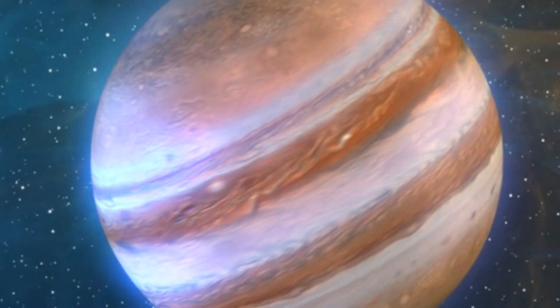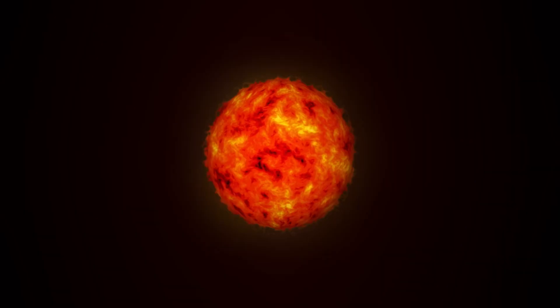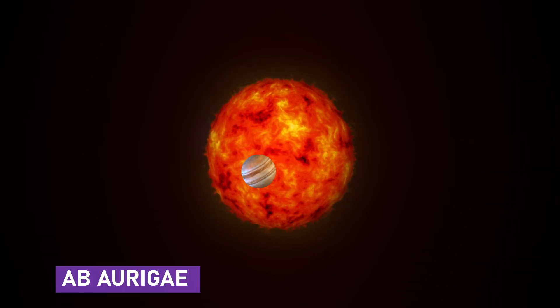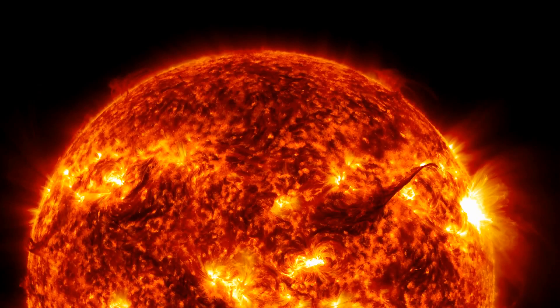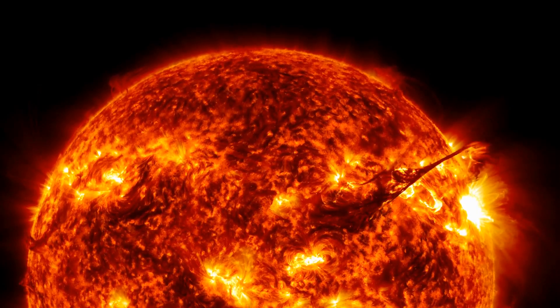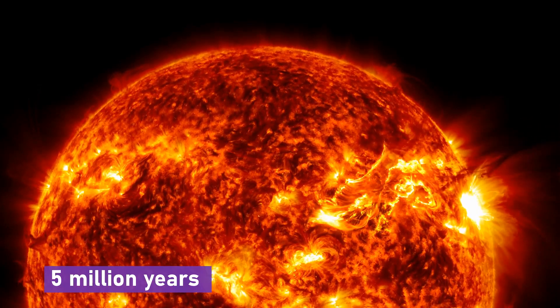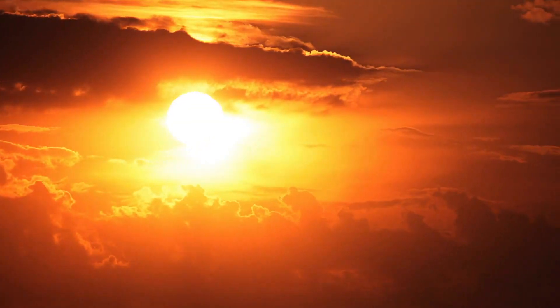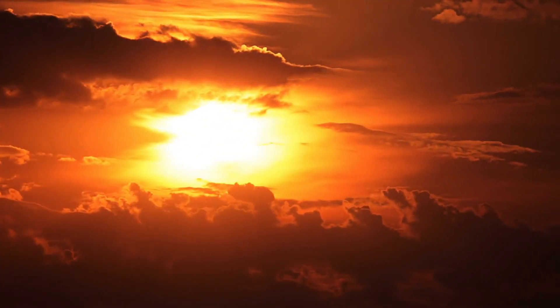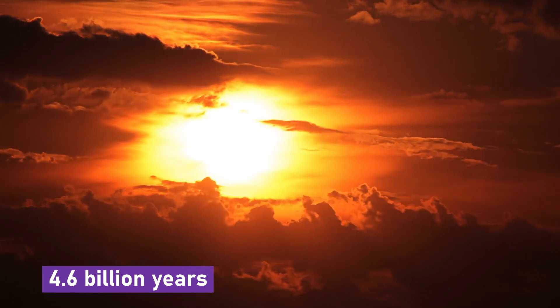A Jupiter-like protoplanet has been discovered in orbit around the young star AB Aurigae. The star is likely still in the process of forming and cannot be older than 5 million years. To put this in perspective, the age of our Sun is 4.6 billion years.